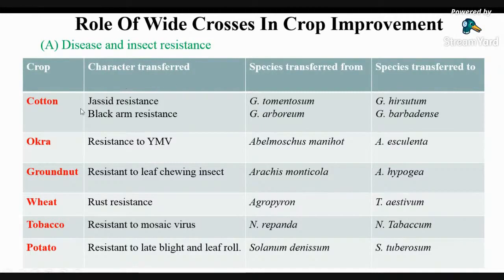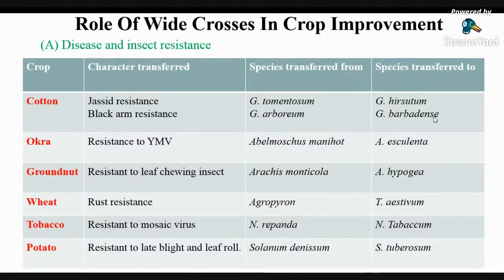Role of wide hybridization in crop improvement — disease and insect resistance: In cotton, jassid resistance is transferred to Gossypium hirsutum from the wild relative Gossypium tomentosum; black arm resistance is transferred to Gossypium barbadense from Gossypium arboreum. In okra, resistance to yellow mosaic virus is transferred to Abelmoschus esculentus from Abelmoschus manihot. In groundnut, resistance to leaf-eating insects is transferred to Arachis hypogaea from Arachis pustulata. In wheat, rust resistance is transferred to Triticum aestivum from Agropyron. In tobacco, resistance to mosaic virus is transferred to Nicotiana tabacum from Nicotiana repanda.